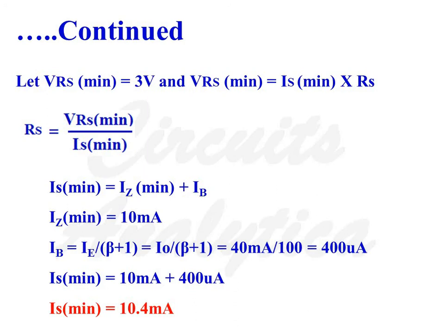Let VRS minimum equal 3V. Since VRS minimum equals IS minimum times RS, we have RS equals VRS minimum divided by IS minimum. IS minimum equals IZ minimum plus IB, where IZ minimum equals 10mA from the datasheet.